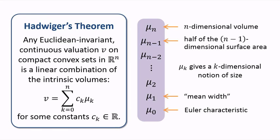That is, the space of all valuations on n-dimensional tame sets is actually a vector space, and the intrinsic volumes are a basis for this vector space. That's the classic Hadwiger theorem.